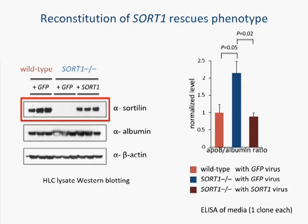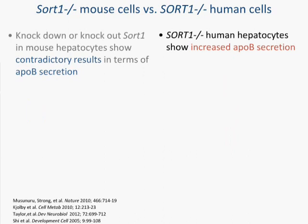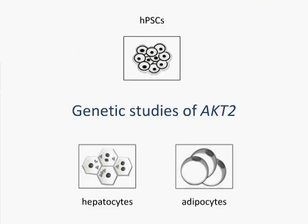To make sure this wasn't due to us introducing any other mutations, we also made a knockout in a second cell line in a second exon and got the exact same results. To summarize what we found in terms of sortilin mutations in human cells: knockdown and knockout experiments in mouse hepatocytes had contradictory results, but we find quite conclusively that sortilin knockout in human hepatocytes shows an increase in ApoB secretion, consistent with the genetic results in humans. We also found that a knockout in sortilin in human adipocytes actually abrogated glucose uptake, and lastly, that knockout actually enhanced survival.